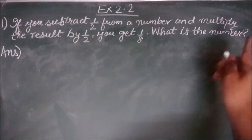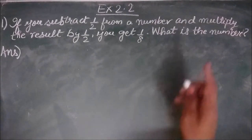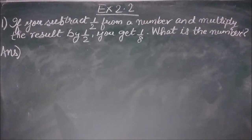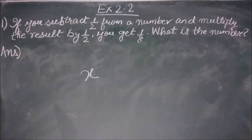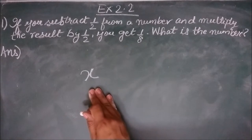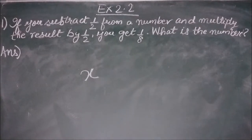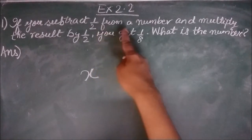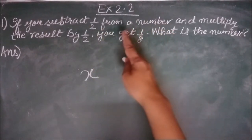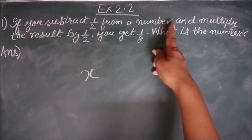The last statement says what is the number, so clearly the unknown is the number. Whatever is unknown, we will assume it is x or just any variable name can be assigned to it. Now let us read the first statement again. If you subtract 1 by 2 from a number, clearly the number is x.